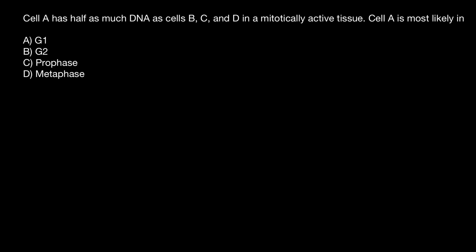Hello and welcome to Nikolai's Genetics Lessons. Today's question is: Cell A has half as much DNA as cells B, C, and D in mitotically active tissue. Cell A is most likely in which phase?